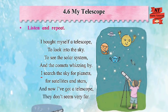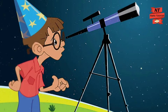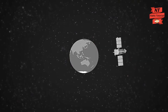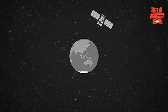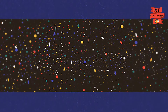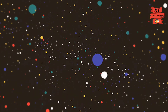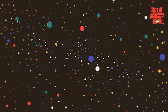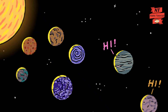Next line: 'I searched the sky for planets, for satellites and stars.' The little boy is very eager to learn about the objects seen in the sky, so he is looking for stars, planets, and satellites. What are planets? Planets are shining objects in the night sky which do not twinkle like the stars. There are eight planets in the solar system.